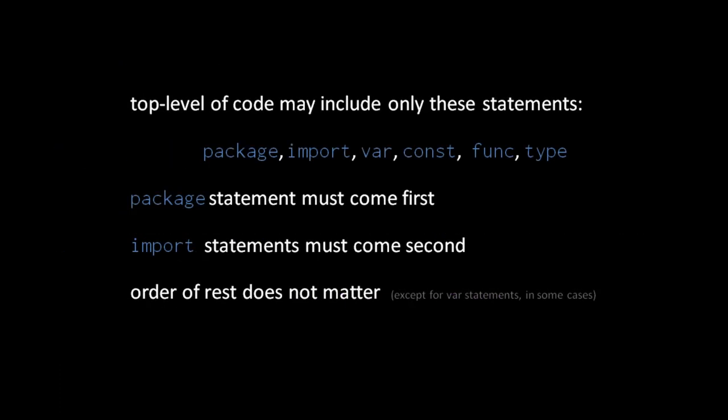At the top level of code, you can only have these statements: package, import, var, const, func, and type. All other kinds of statements can only be used inside functions. A source file's package statement must precede all other statements, and the imports all come second after the package statement. In general, Go doesn't care about the ordering of the rest of your statements, except in some cases your global var statements, as we'll discuss later.